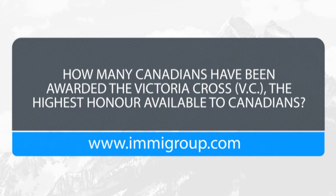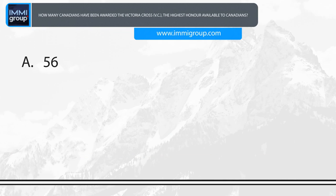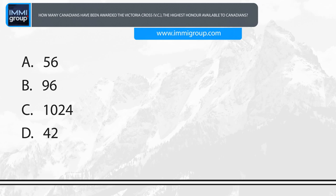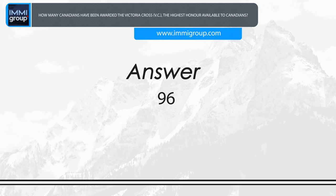How many Canadians have been awarded the Victoria Cross (VC), the highest honour available to Canadians? A. 56. B. 96. C. 1,024. D. 42. Answer: 96.